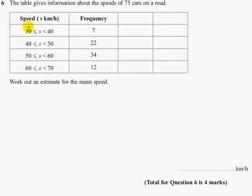So if we have a look, this is greater than or equal to 30 kilometres per hour, but less than 40, there were 7 cars going that speed. There were 22 cars going greater or equal to 40 kilometres per hour, but less than 50.